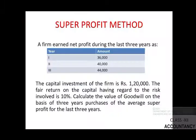Now let's take a numerical question. A firm's net profits during the last three years are: Year 1 — ₹36,000; Year 2 — ₹40,000; Year 3 — ₹44,000. The capital investment of the firm is ₹1,20,000, and the fair return on capital having regard to the risk involved is 10%. Calculate the value of goodwill on the basis of three years' purchase of the average super profit of the last three years.